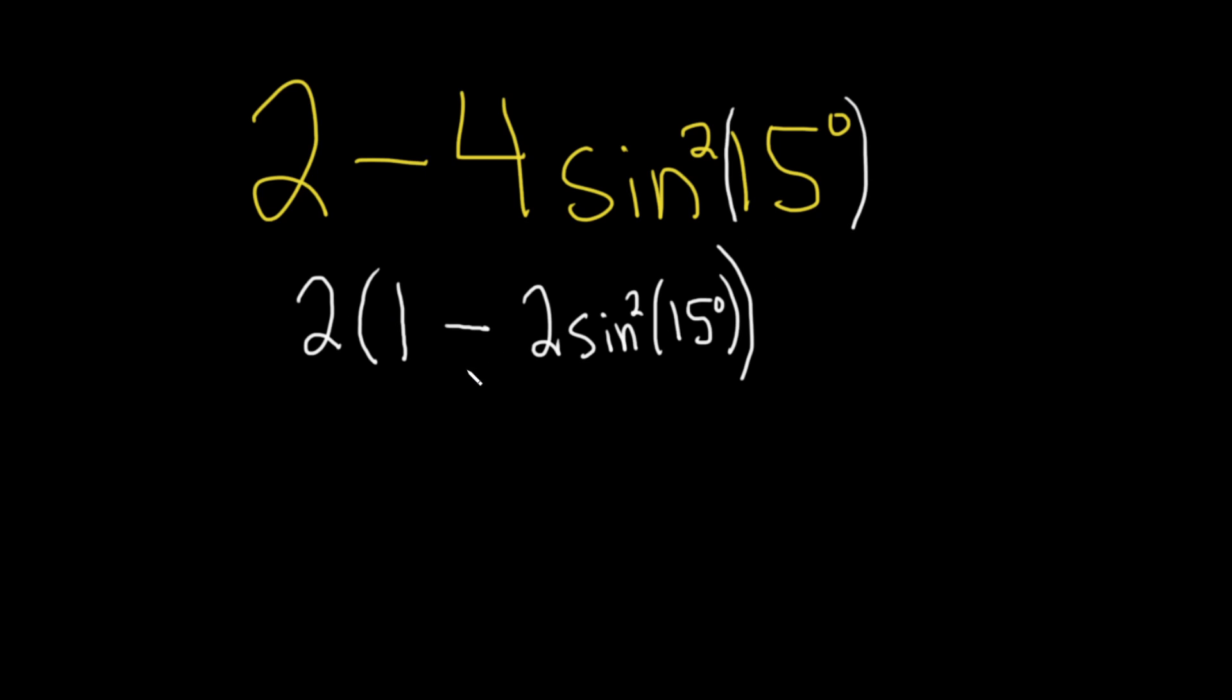At this point, there's an identity that comes to mind. Recall that the cosine of 2x equals 1 minus 2 sine squared x. This is an identity from trig that we're going to use in this problem.